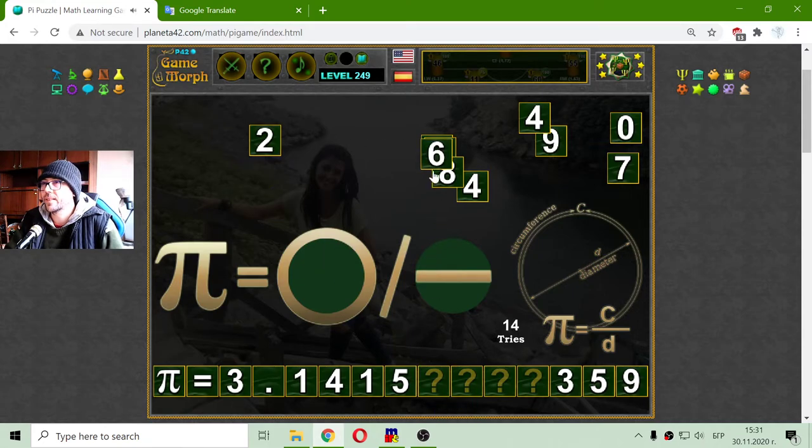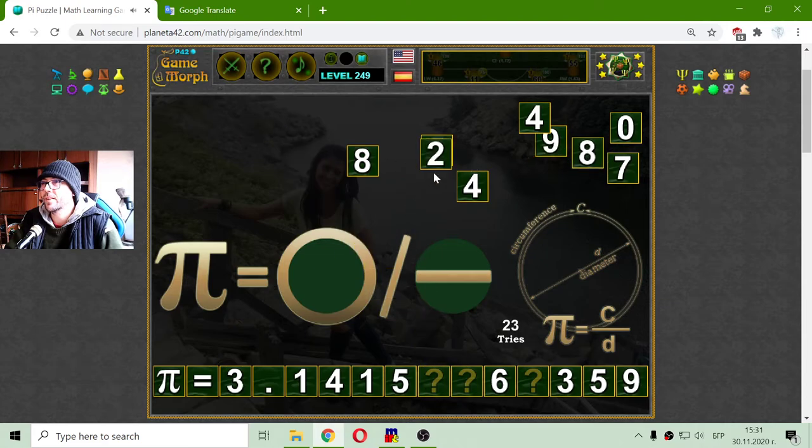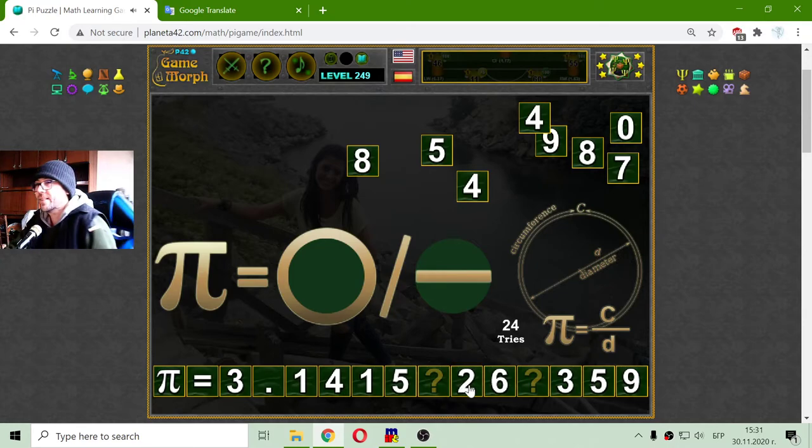6. There is a 6. Now I have two missing numbers. There are at least two 8s. There are two 8s, let me, I think that is a second.